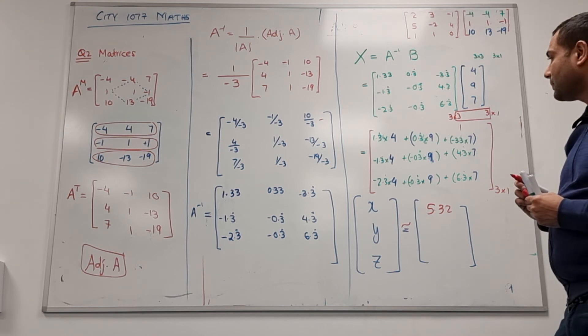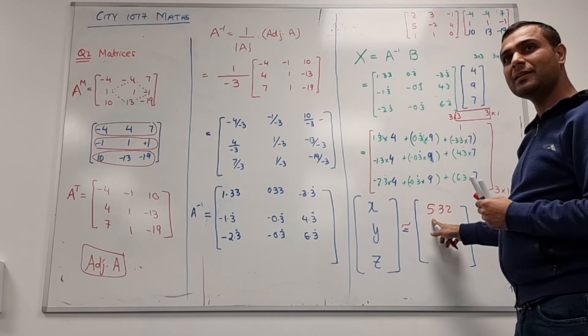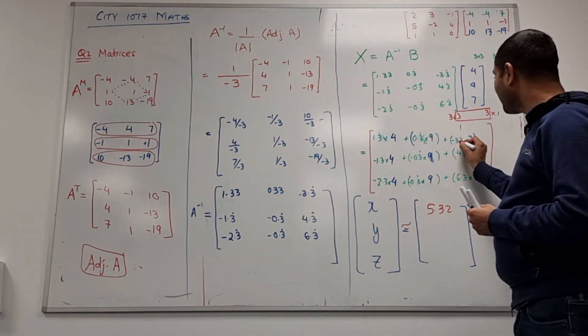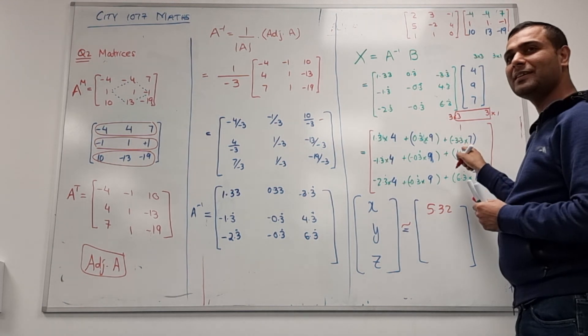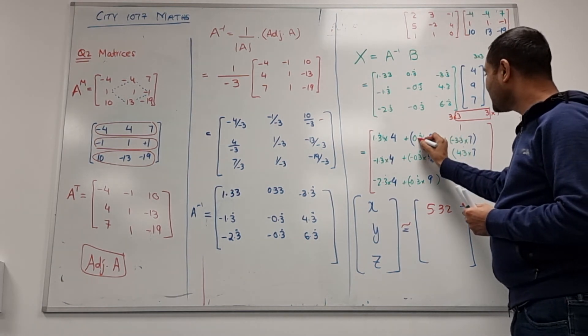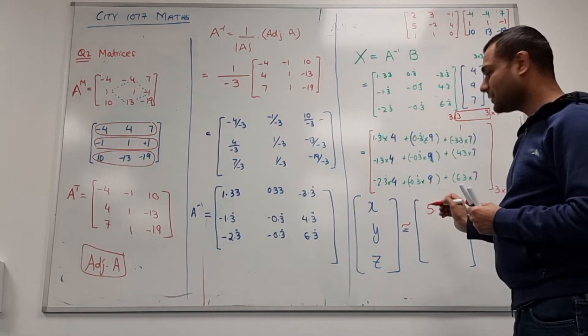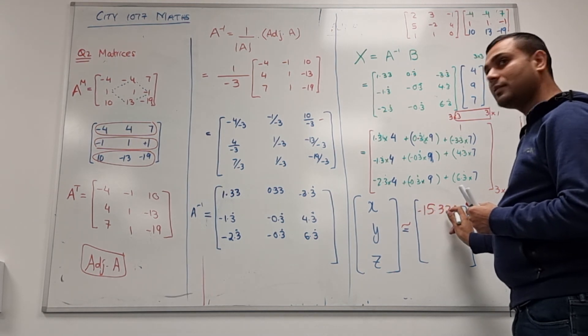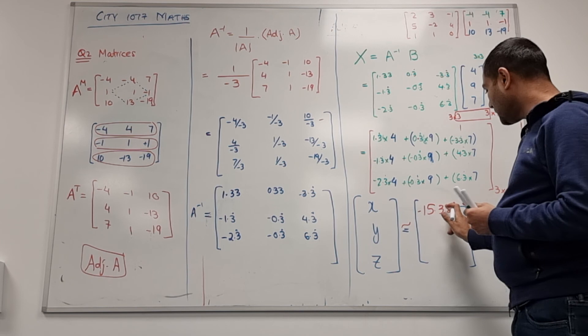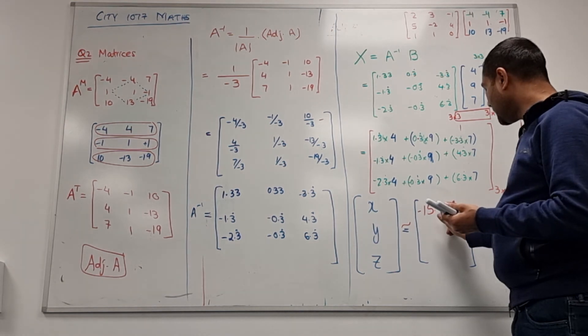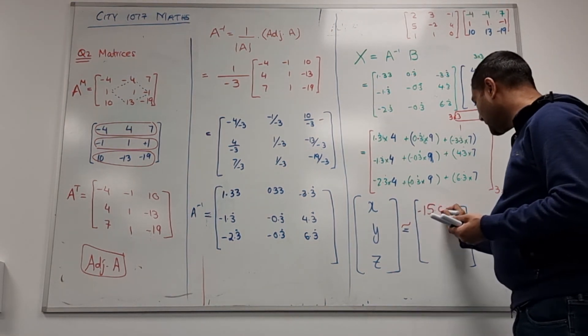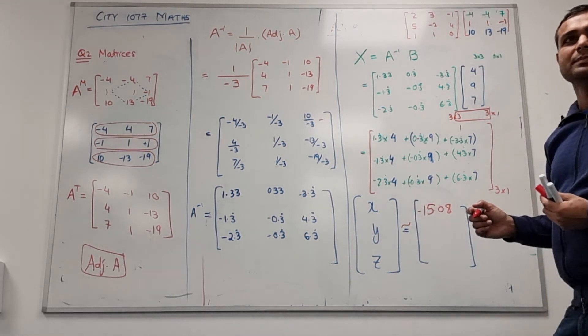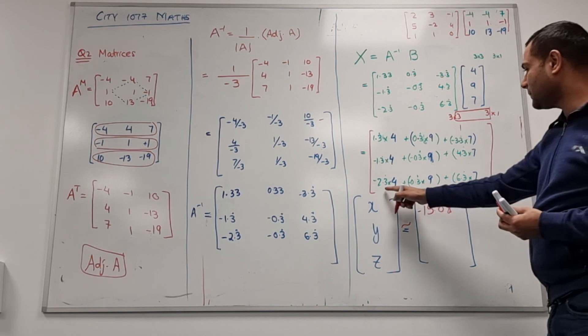The first one is minus, no no sorry it's 3.3 not 33. The first one is minus 15.08, okay. Depends how you round, I just put nearly equal to. The second one? If anyone can do the last one please.